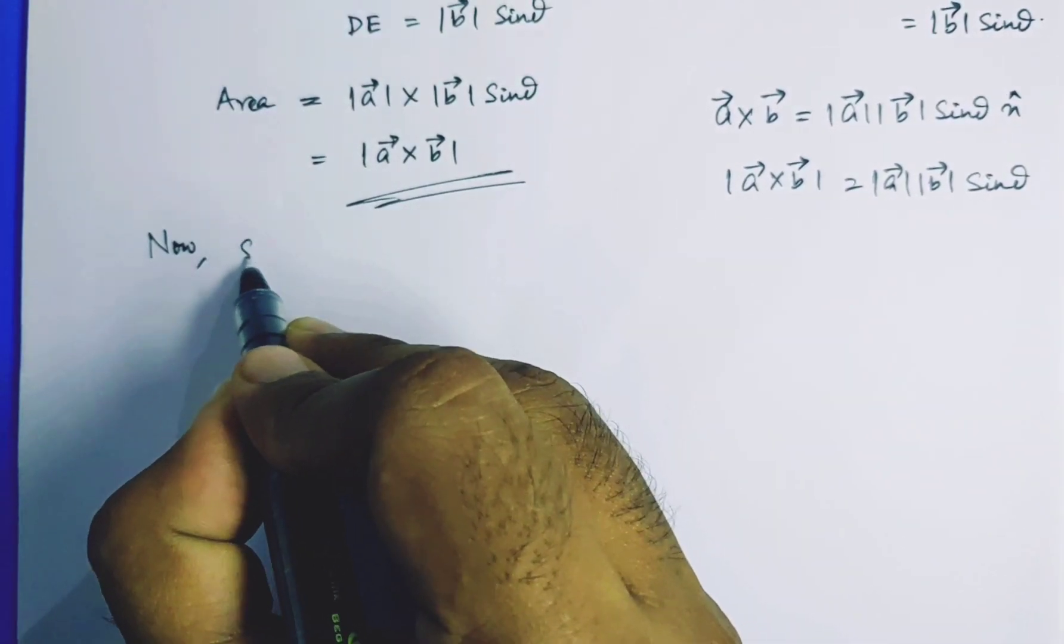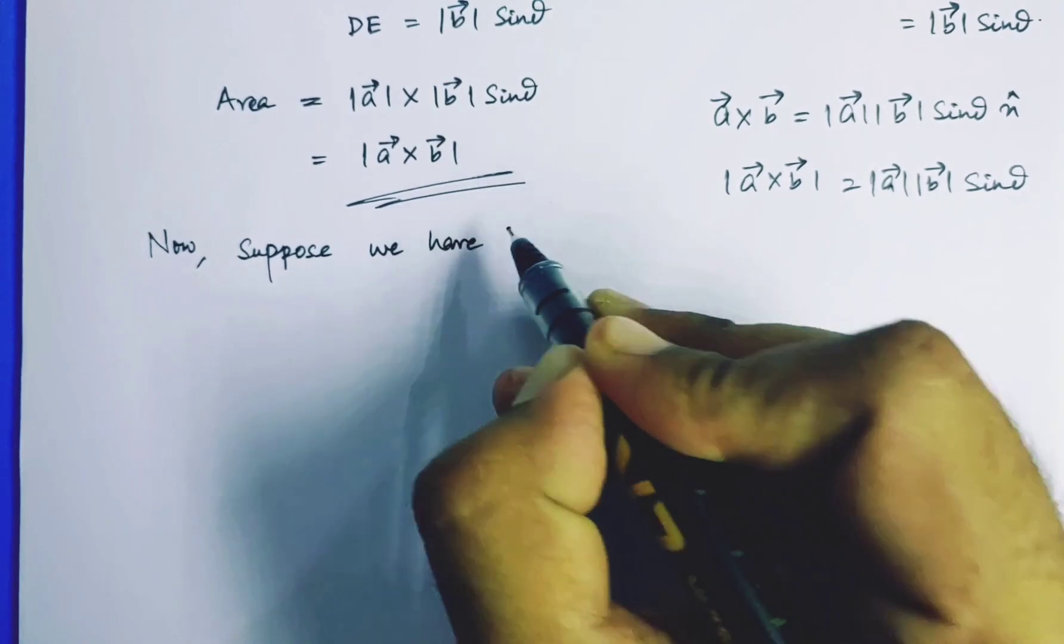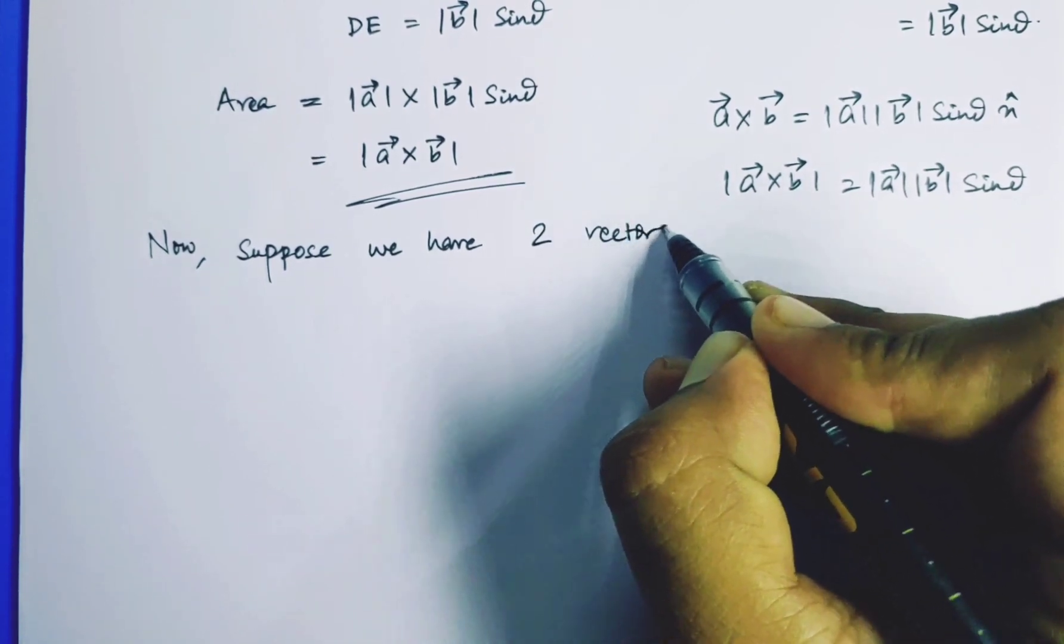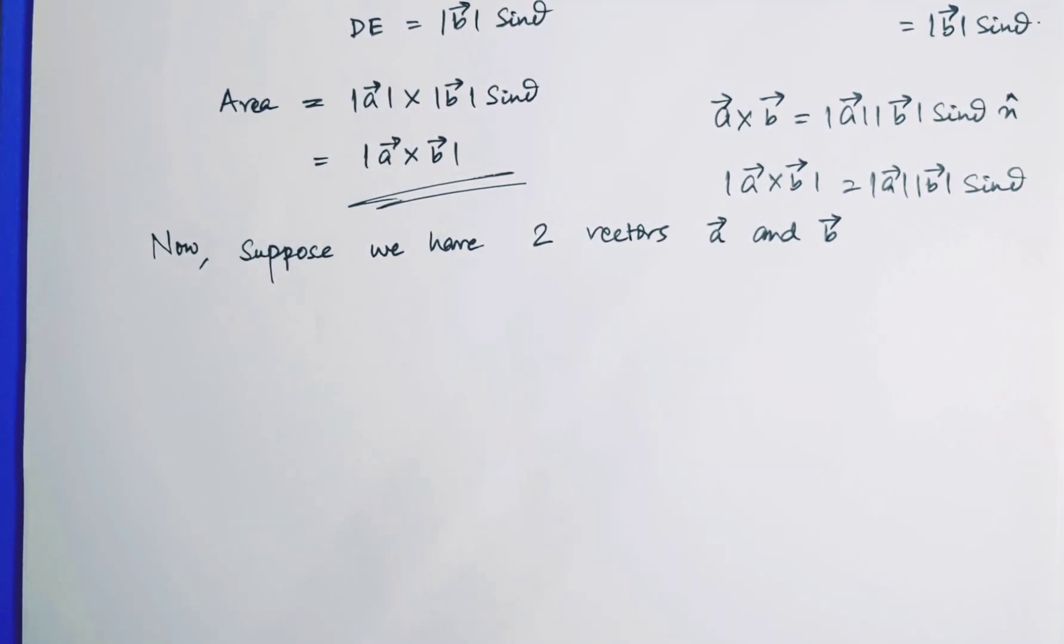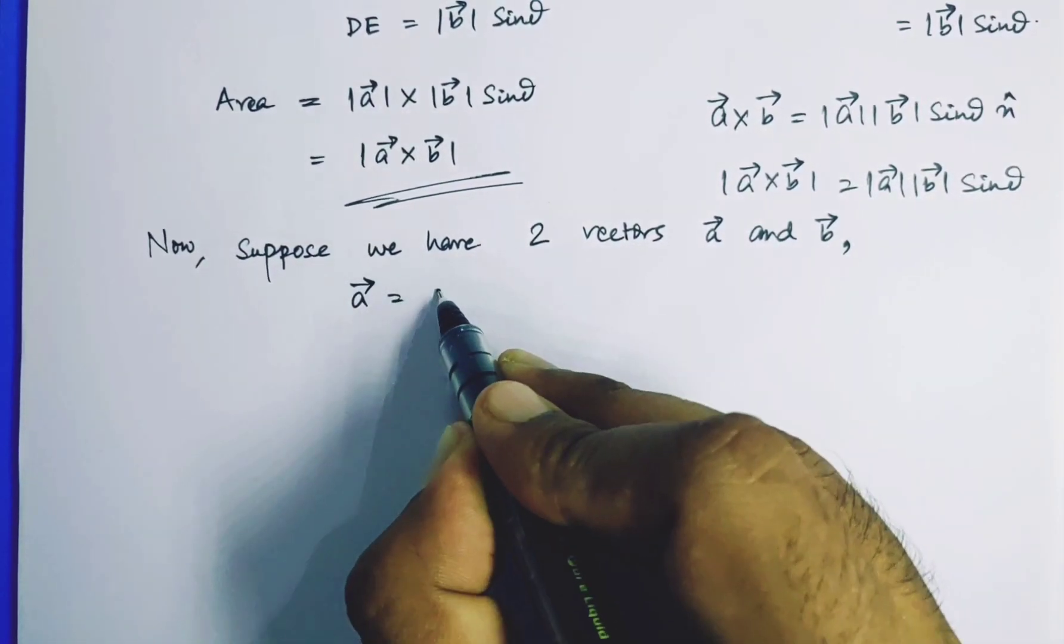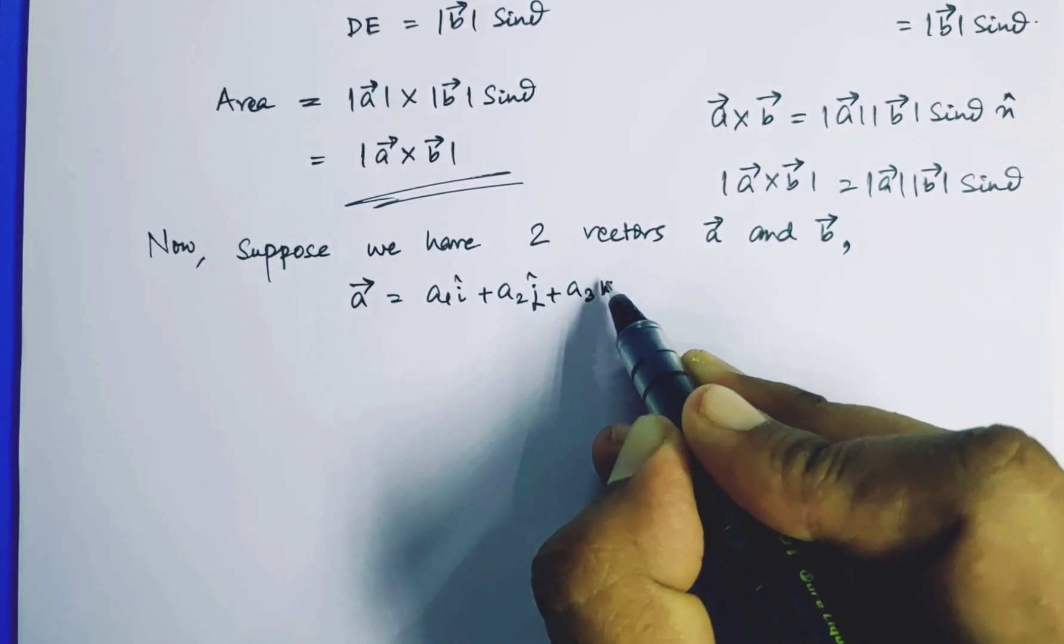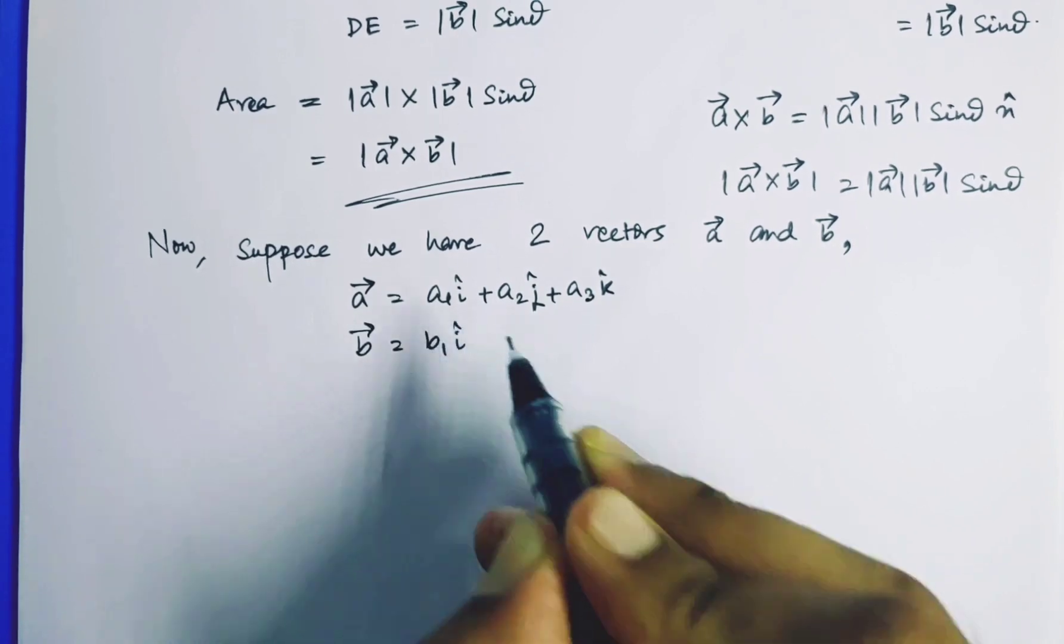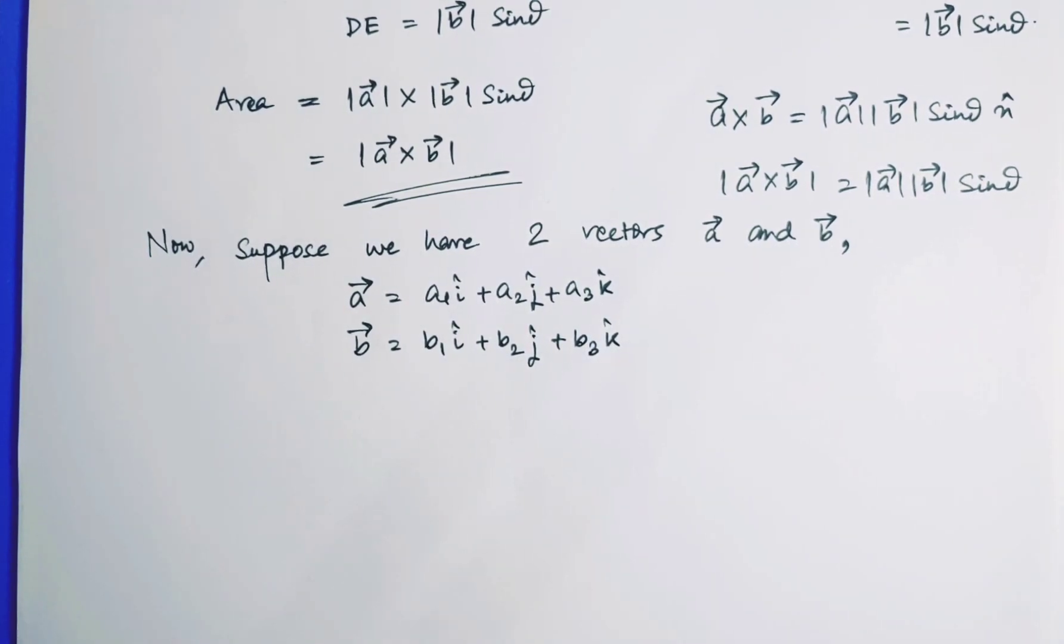Now suppose we have two vectors A and B. Where A is given by A1 i cap plus A2 j cap plus A3 k cap. And B vector is given by B1 i cap plus B2 j cap plus B3 k cap.